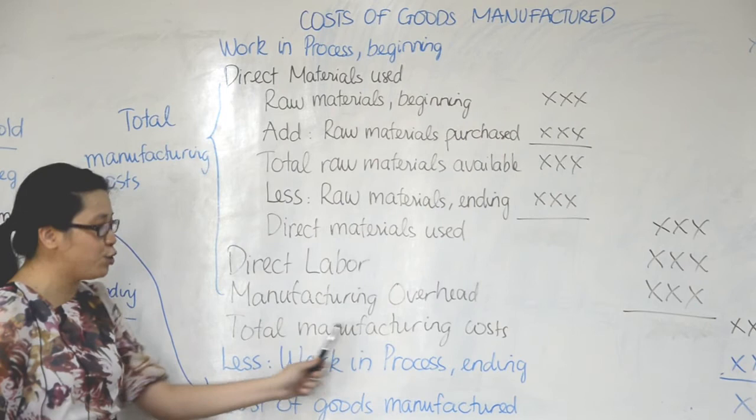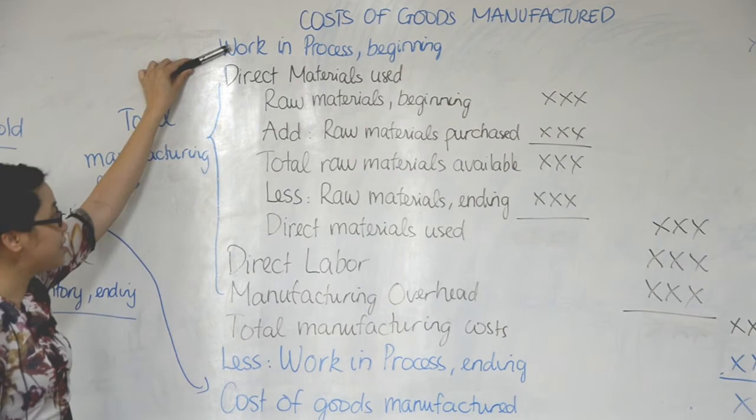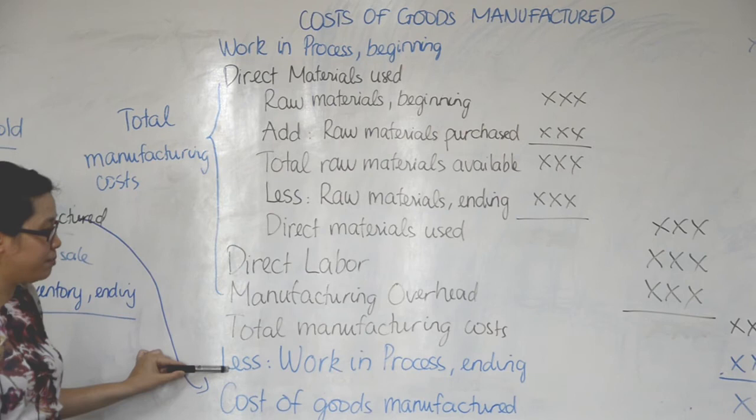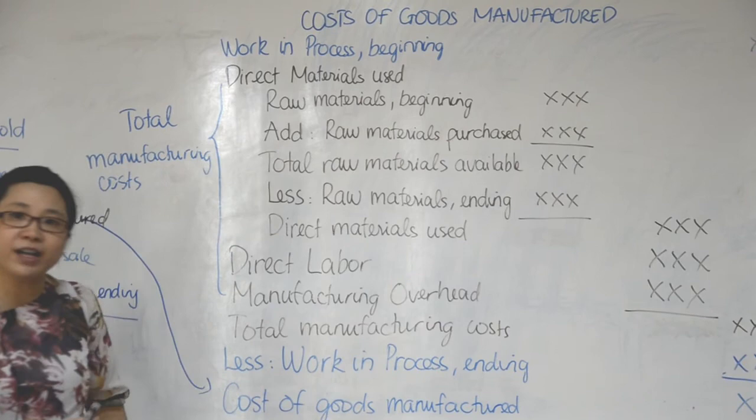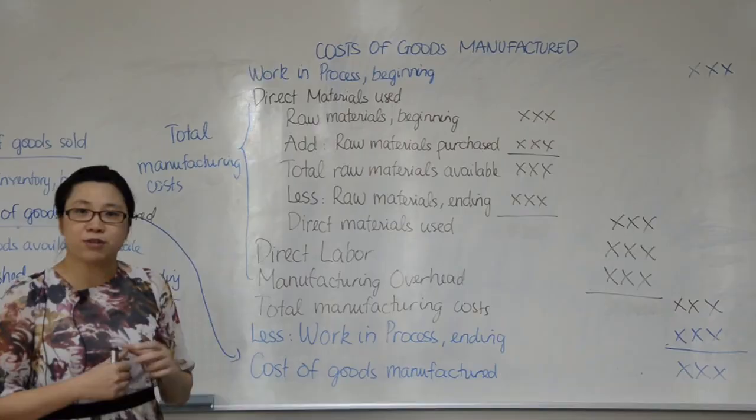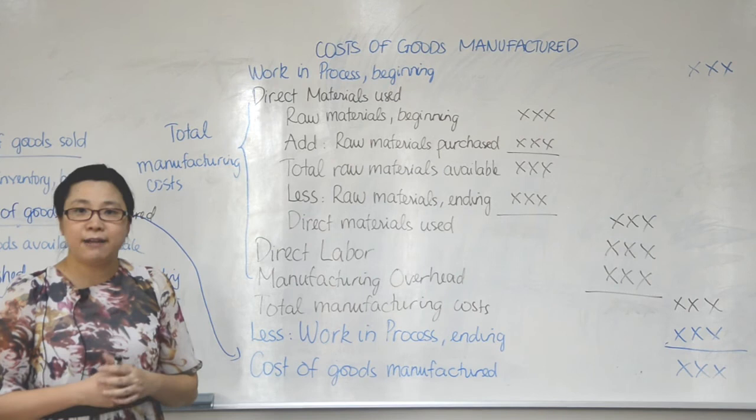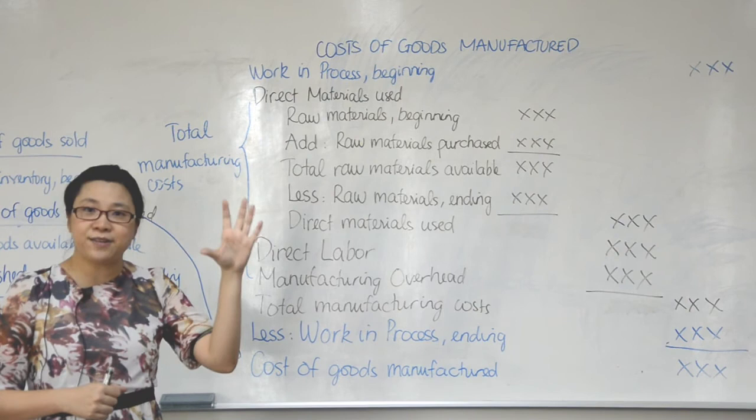So to recap: work in process at the beginning, plus total manufacturing cost, minus work in process at the end, gives us cost of goods manufactured. From cost of goods manufactured, you can find cost of goods sold in the income statement, and then find gross profit by taking net sales minus cost of goods sold.